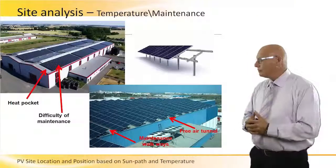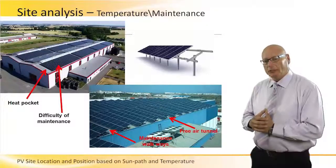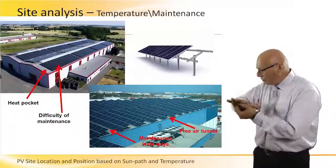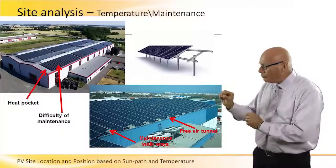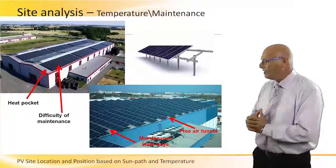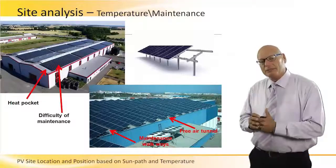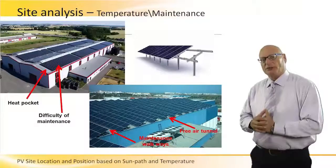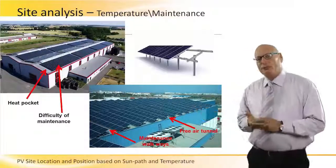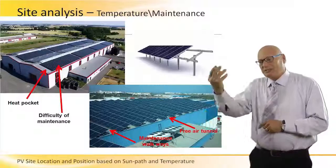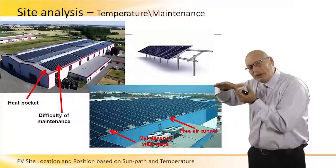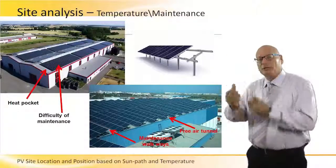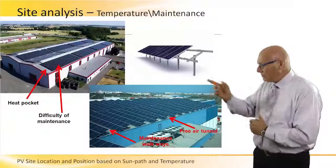Look at the heat pockets on the top left — a factory with large arrays. No spaces between one module and another — it's just like a huge plate, very close to the roof itself, creating heat pockets. Not only is it creating heat pockets, but the area of the roof not covered by panels gets hot, and that hot air is dissipated from underneath the panels. Since we have a continuous homogeneous layer of panels, the heat waves have nowhere to go — they just go up and hit the backside of the panels, lowering efficiency. This is a very bad example.